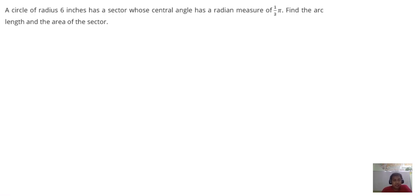A circle of radius 6 inches has a sector whose central angle has a radian measure of one-third pi. Find the arc length and area of the sector.